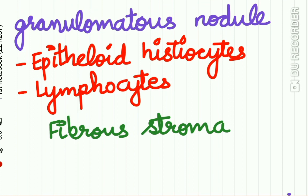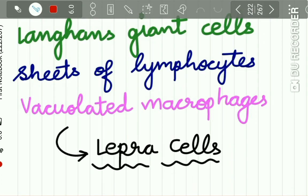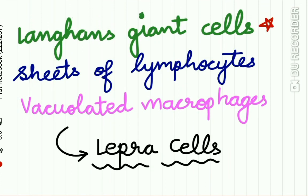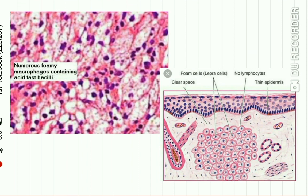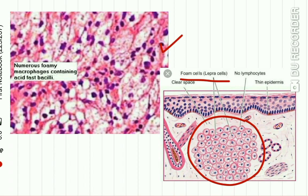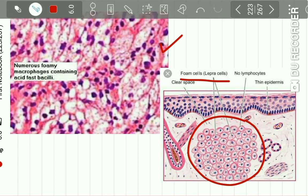The histologic picture of lepromatous leprosy lesion shows a granulomatous nodule composed of epithelioid histiocytes, lymphocytes, and fibrous stroma. There may be Langhans-type giant cells present. Invariably, sheets of lymphocytes are present with vacuolated macrophages called lepra cells. Here you can see the foam cells or lepra cells present in the dermis, and the microscopic picture shows numerous foamy macrophages containing acid-fast bacilli.